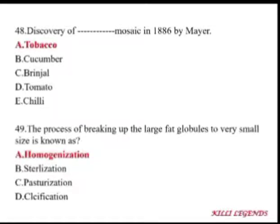The process of breaking up large fat globules into very small size is known as homogenization. Sterilization removes all microbes or contamination. Pasteurization is done in the case of milk using high and low temperature alternately to eliminate unwanted microbial growth. Calcification is a calcium-related process.